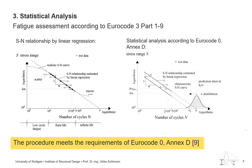According to Eurocode 0, a prediction interval — you can see it on the right side — is used for fractile estimation to derive fatigue strength with 95% probability of survival. The determined SN curve with 95% probability of survival describes the characteristic fatigue strength. The characteristic fatigue strength at 2 million cycles refers to the fatigue detail category.